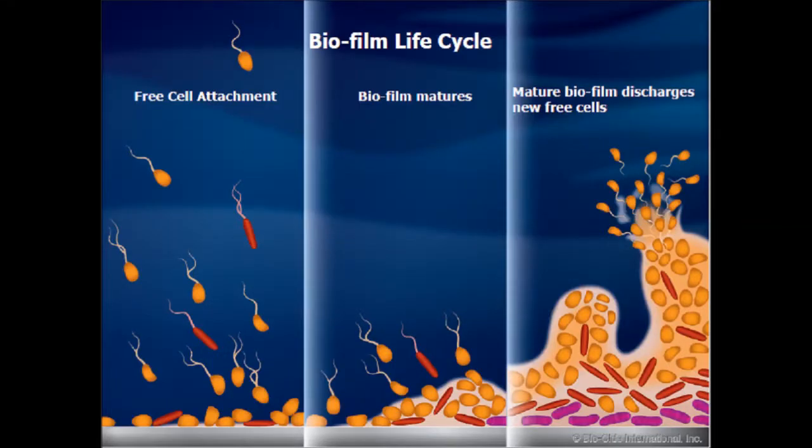This illustration shows how biofilm forms inside the water system. Free bacteria cells in the water attach to the interior surfaces of the system where they amass and grow. With no residual sanitizer protection to arrest growth, they mature and the process continues.